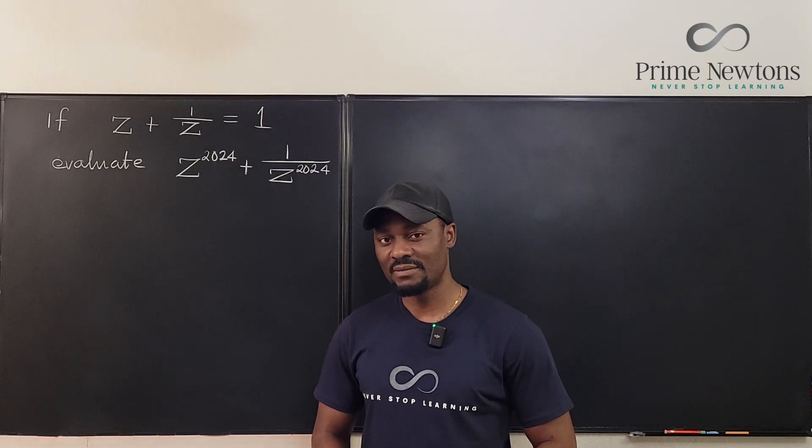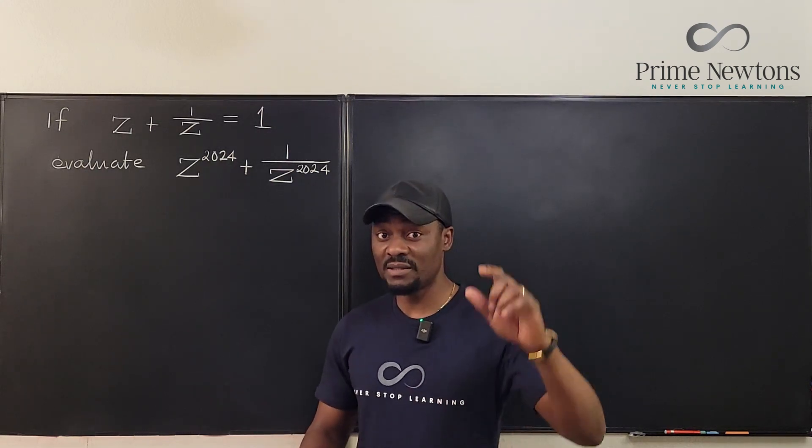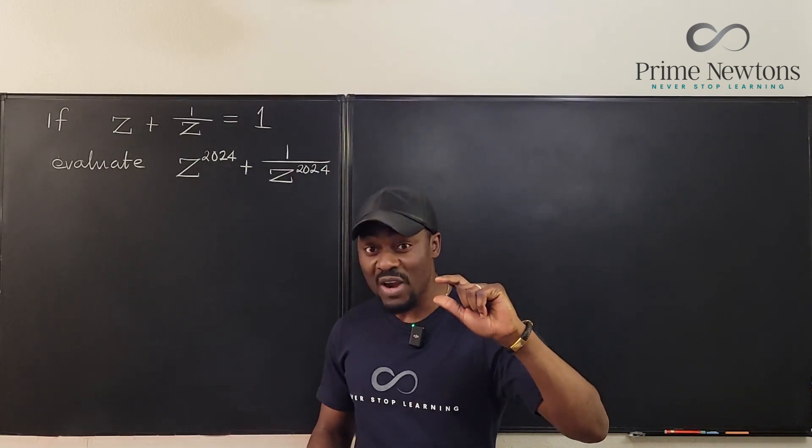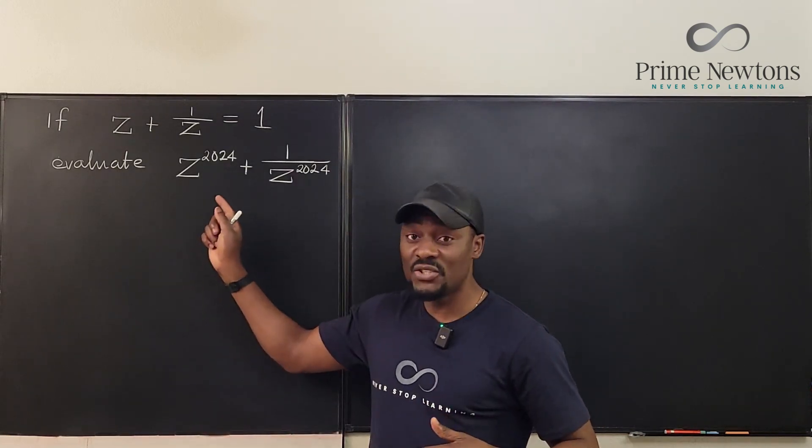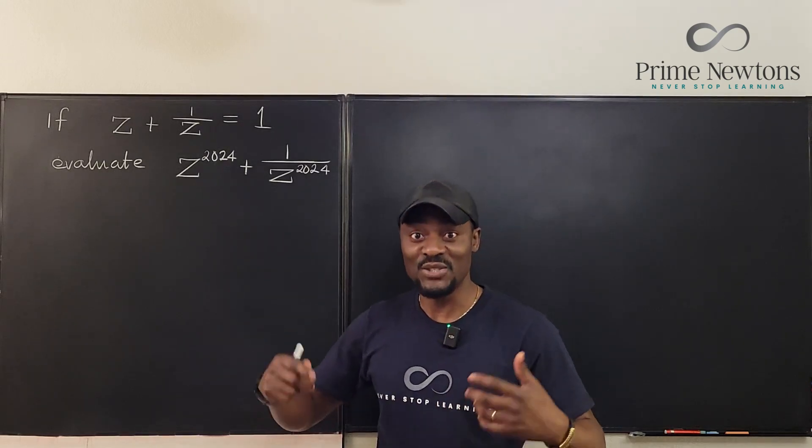Welcome to another video. If we're given that z plus the reciprocal of z is equal to 1, then we're asked to evaluate z to the 2024 plus the reciprocal of z to the 2024.